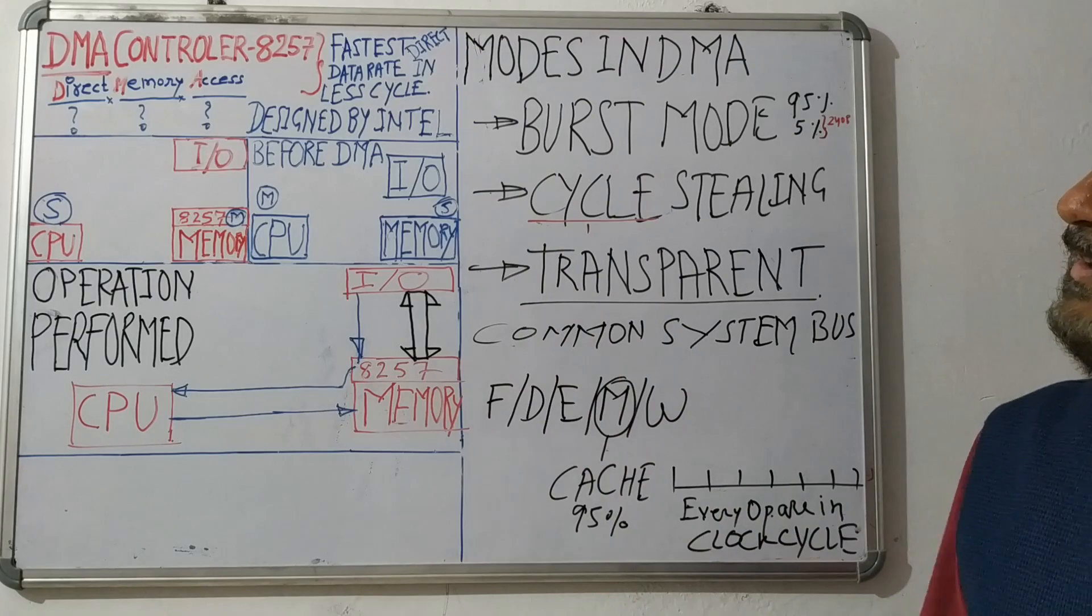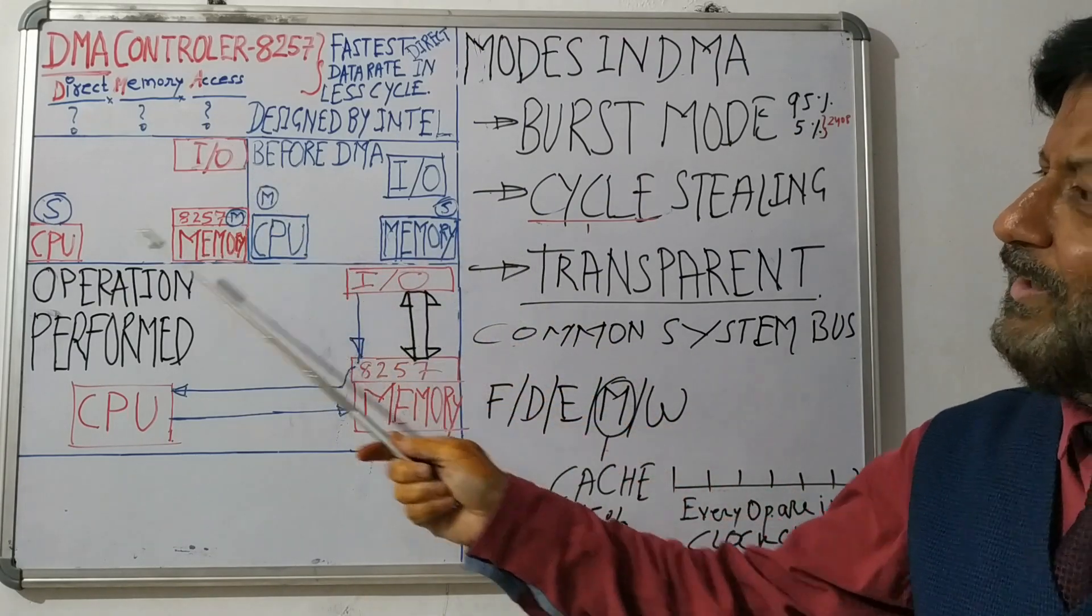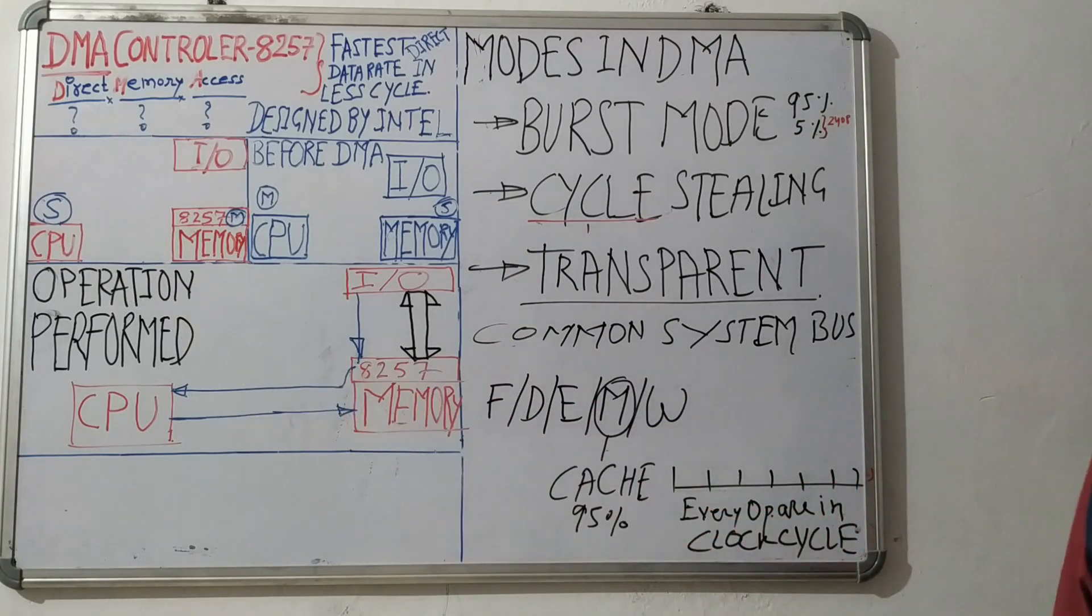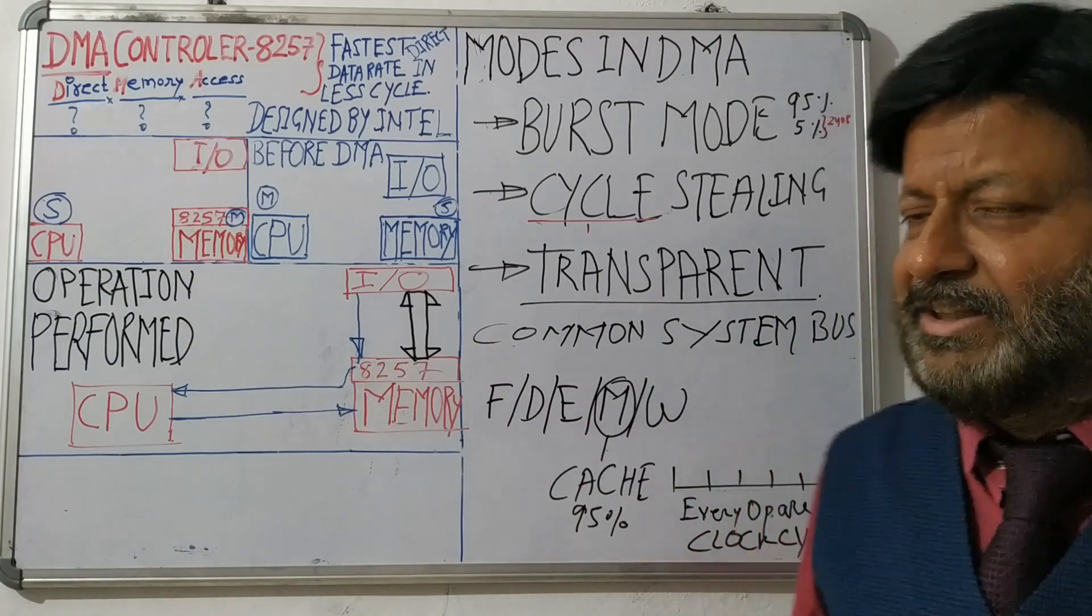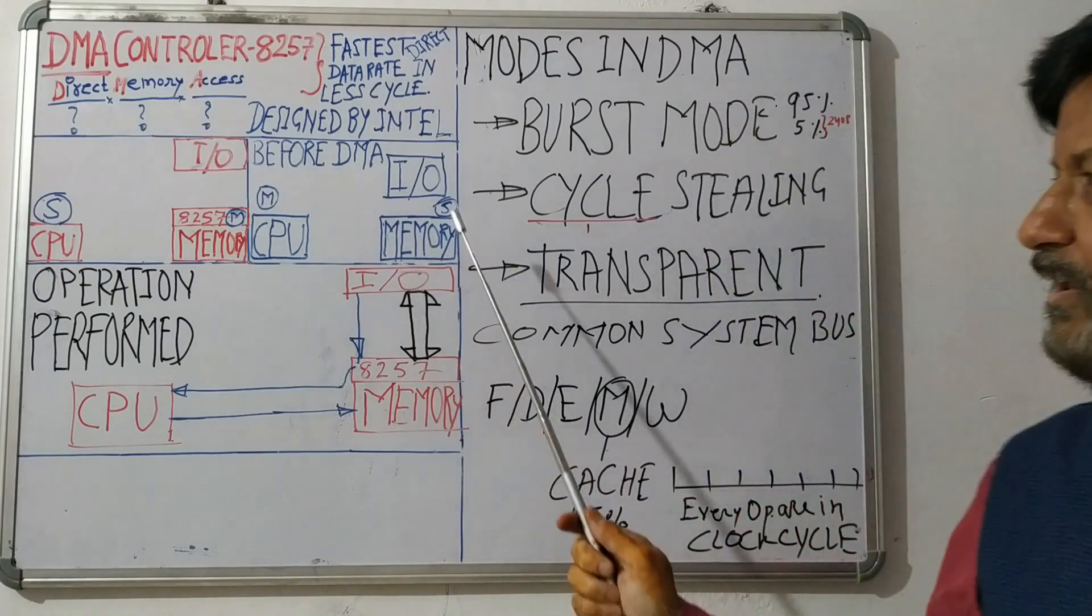So there are three actors in this picture: IO, Memory, and CPU. Usually what happens is we will see when DMA is not being in use, or before DMA we can see the scenario.